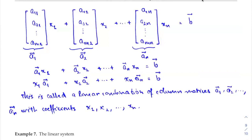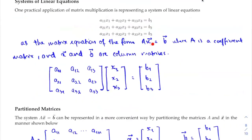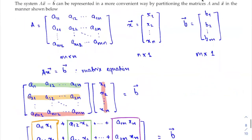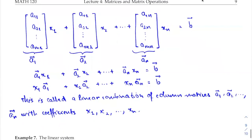So that is how you take a system of linear equations, turn it into a matrix equation of the form AX equals B, and then further partition that matrix equation to obtain something called a linear combination of column matrices or column vectors, with coefficients X1, X2, …, Xn. This is particularly useful for the later part of the course where you deal with linear combinations of vectors.